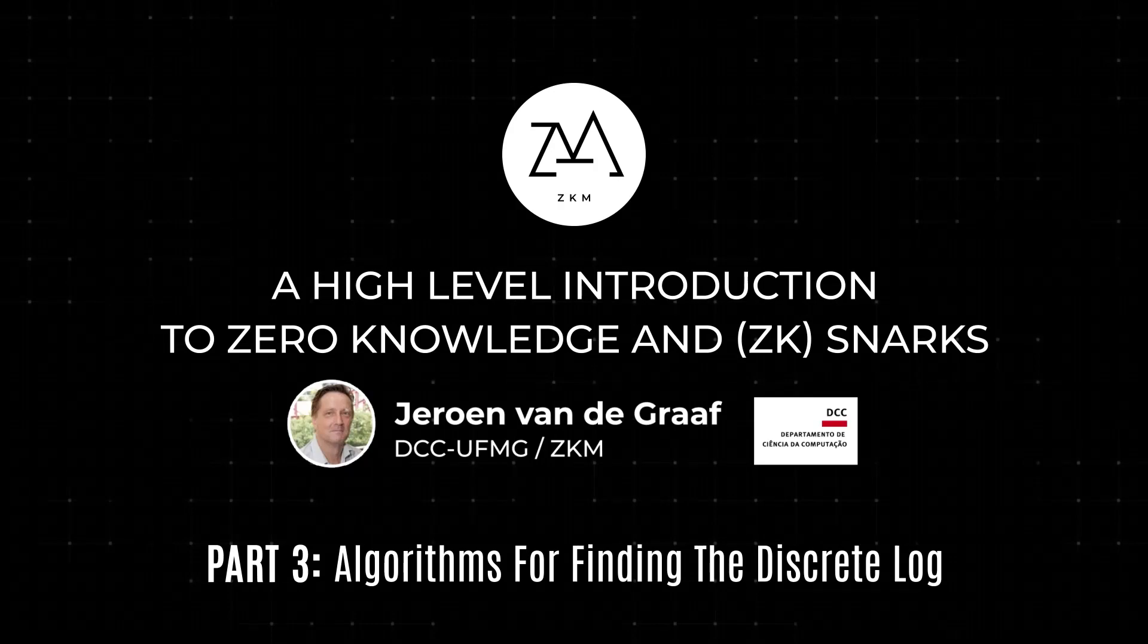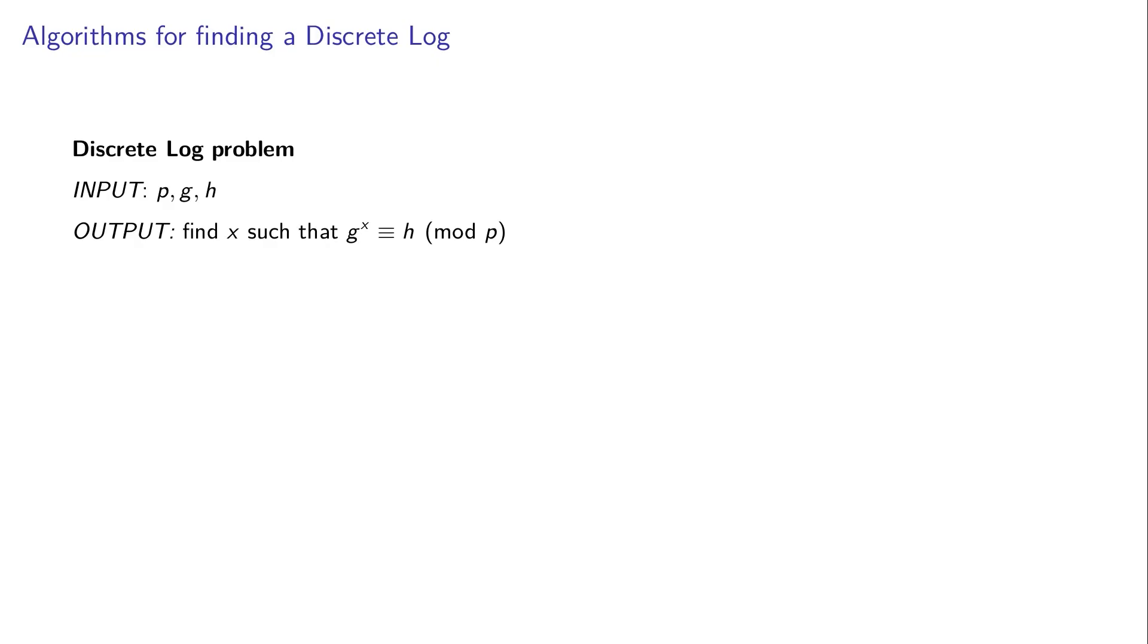To understand the security of discrete log based protocols, we need to discuss the difficulty of finding discrete logarithms. Given a prime p, generator g, and result h, we want to find x such that g to the power x equals h modulo p.